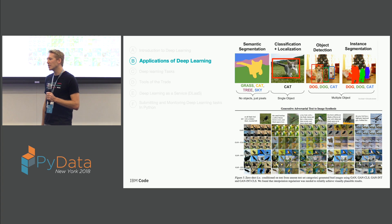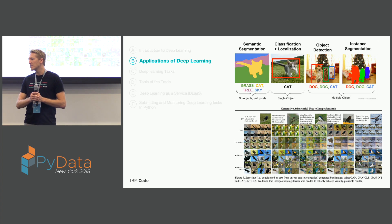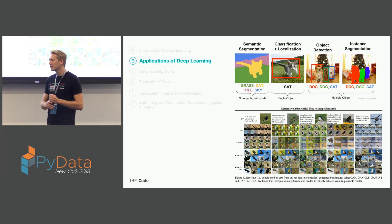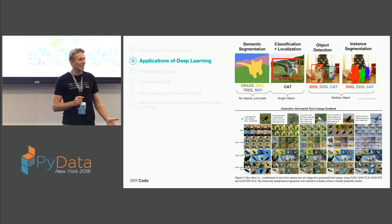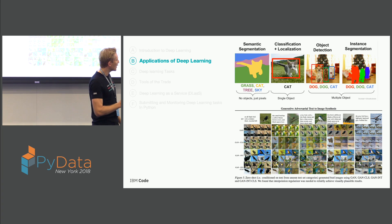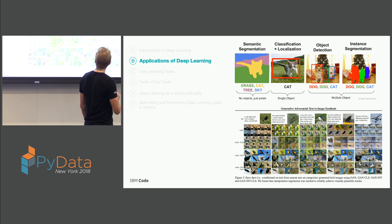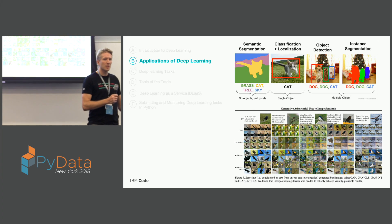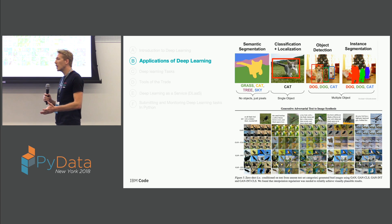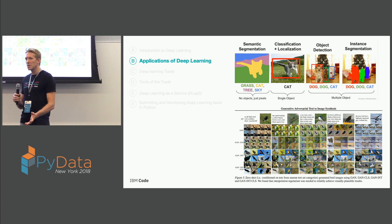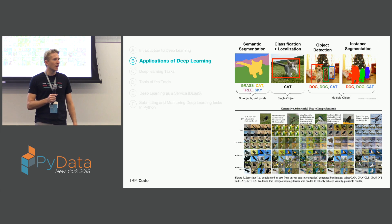Here are some applications of deep learning. We have semantic segmentation. We have classification and localization — can we classify an object and show where it is in an image? We have object detection, showing where objects are in an image, but with multiple objects within a single image. The deep learning model for that is called YOLO — you only look once. We also have image segmentation, which you can do for multiple objects in a single pass.